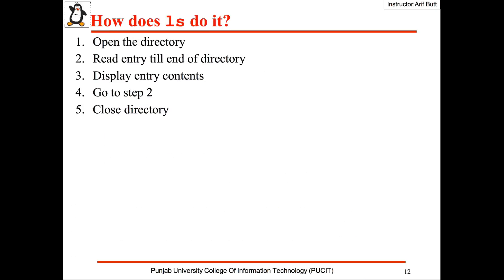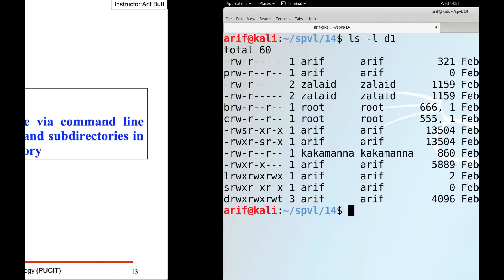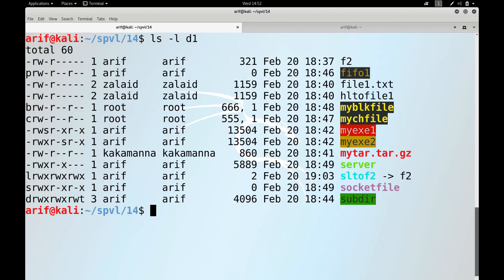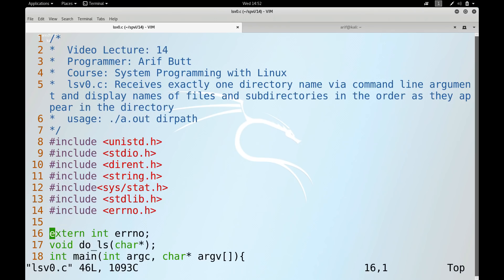Instead of jumping straight to a long-listing ls program, let's start with a very basic version. The algorithm is: open the directory, read an entry, display its contents, if not end of directory go to step 2, then close the directory. The first version receives exactly one directory name via command line argument and displays names of files and subdirectories in the order they appear in the directory.